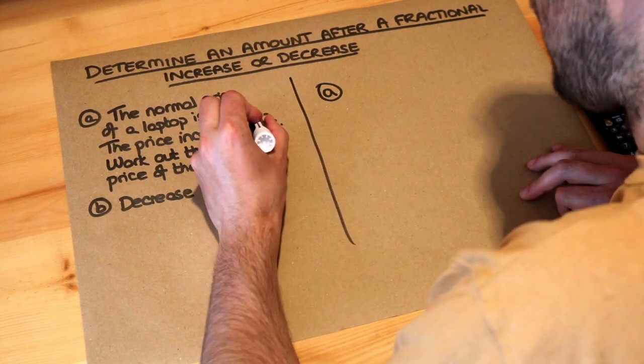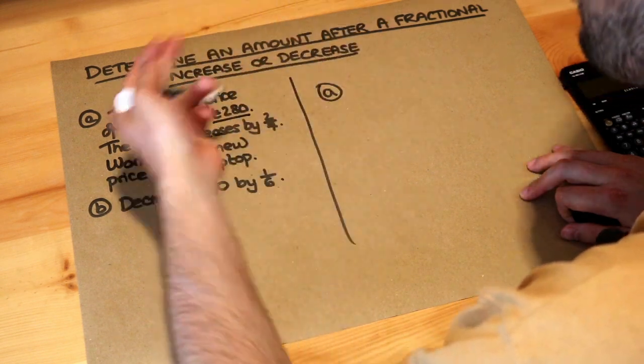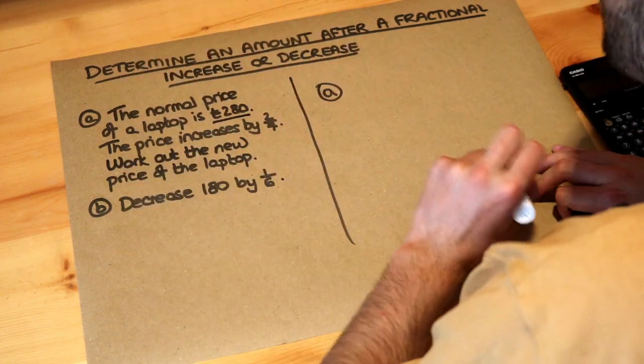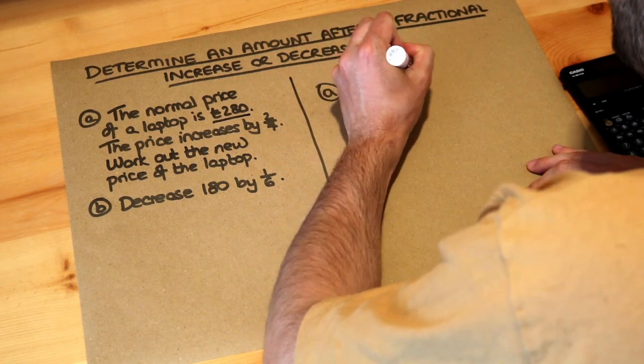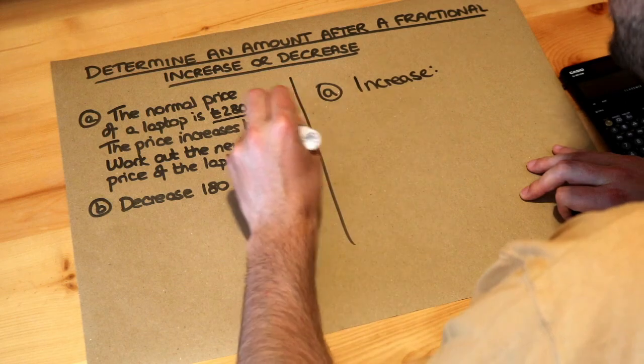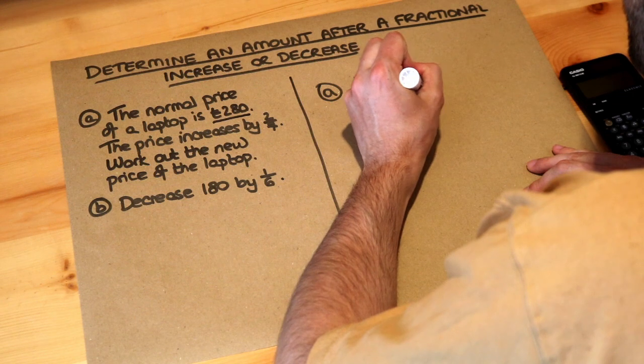Now we could start with that £280 cost of the laptop and we need to increase it by two-sevenths of its amount. So the increase, it says increase by two-sevenths of its value. So the increase was two-sevenths of £280.